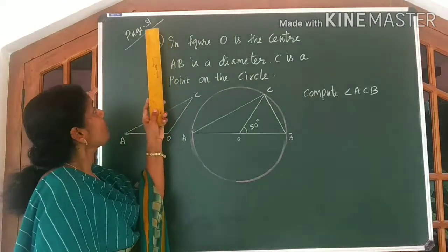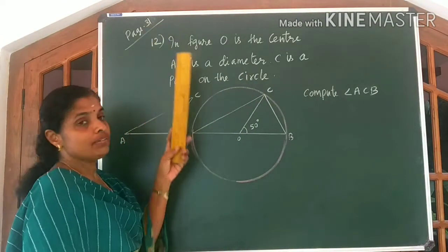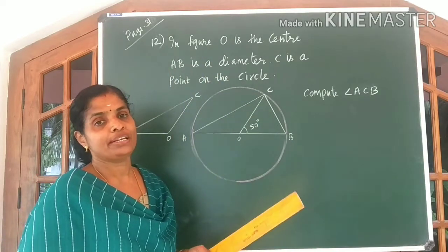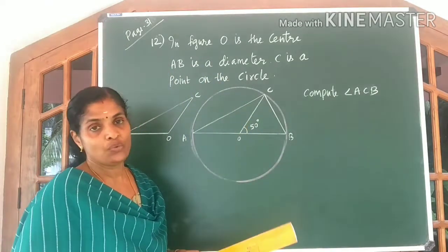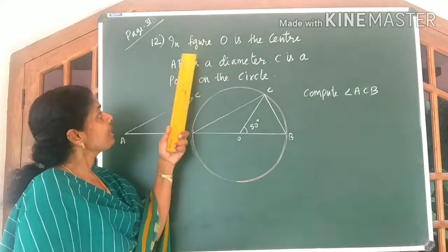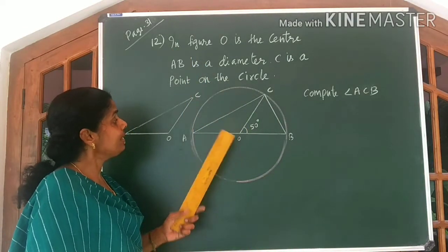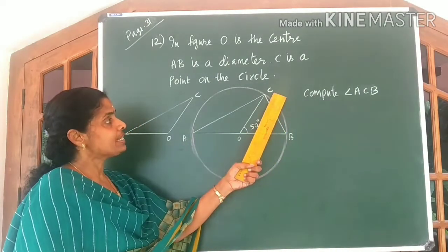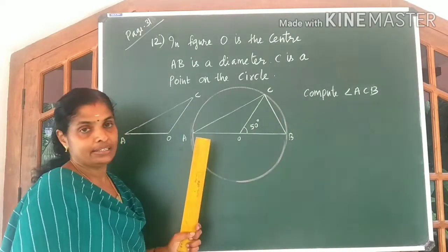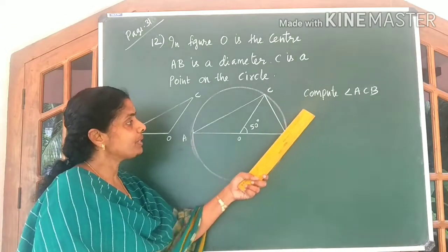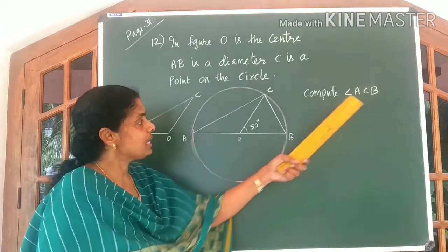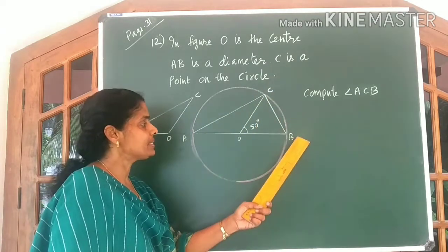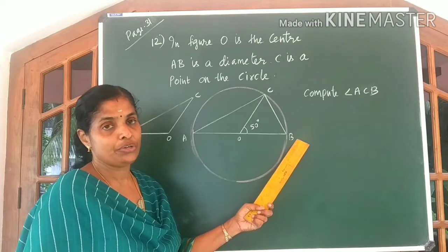This is on page 31, question number 12. This is a very important question. See how I am doing it. Okay? In figure, O is the center, AB is the diameter, C is the point on the circle. Our question is compute angle ACB. You have to find angle ACB. See how I am going to do.